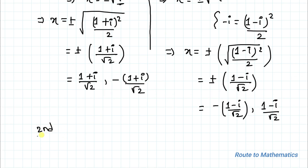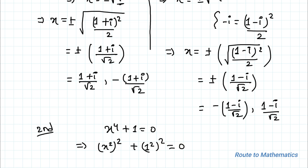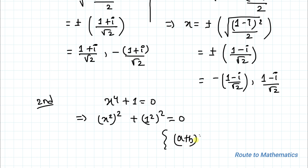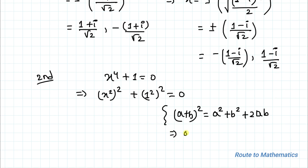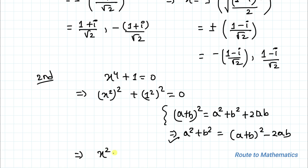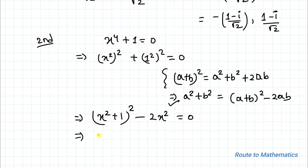Now let's jump into the second approach. In the second approach, x to the power 4 plus 1 equals 0 can be written as x squared whole square plus 1 squared equals 0. Using the algebraic identity a plus b whole square equals a squared plus b squared plus 2ab, we get a squared plus b squared equals a plus b whole square minus 2ab. Considering a as x squared and b as 1, the equation becomes x squared plus 1 whole square minus 2x squared equals 0.